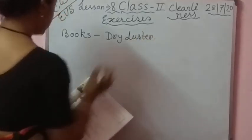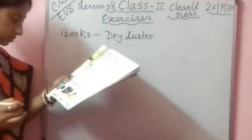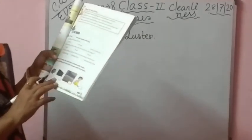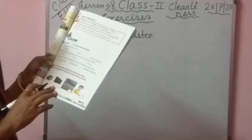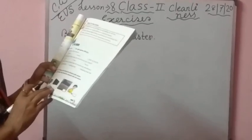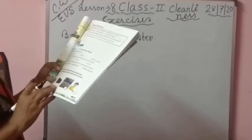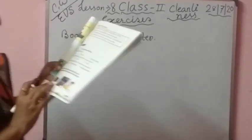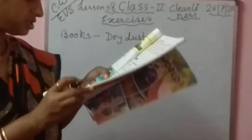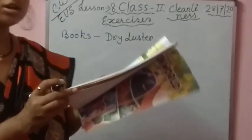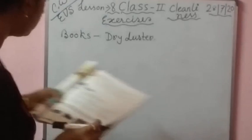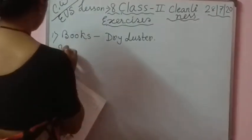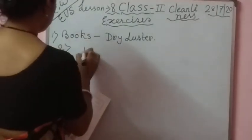Second one: television. This one — television. Number B, second one: also dry dust.